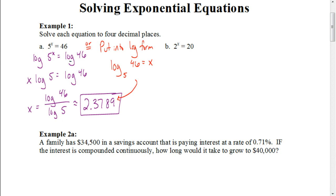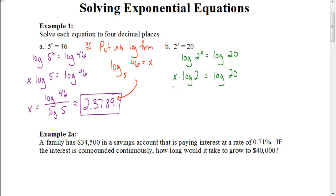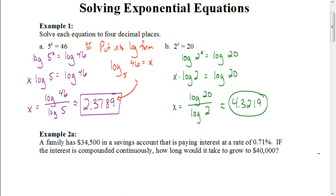Go ahead and work out this next one on your own. You can use either method of your choice, as long as you show your work. Pause the video and hit play when you're ready to check your answer. If you did the first method, you would start by taking the log of both sides: log of 2 to the x power equals the log of 20. That x gets moved in front of the logarithm, then divide both sides by log of 2 to get x by itself, giving approximately 4.3219.